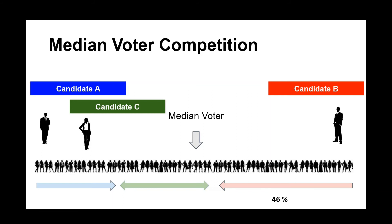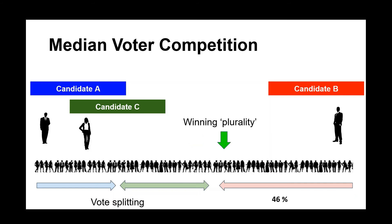candidate C would take some of their voters away, which again would change the winning margin. You no longer need a majority if you're candidate B — you can win with a plurality of the votes.